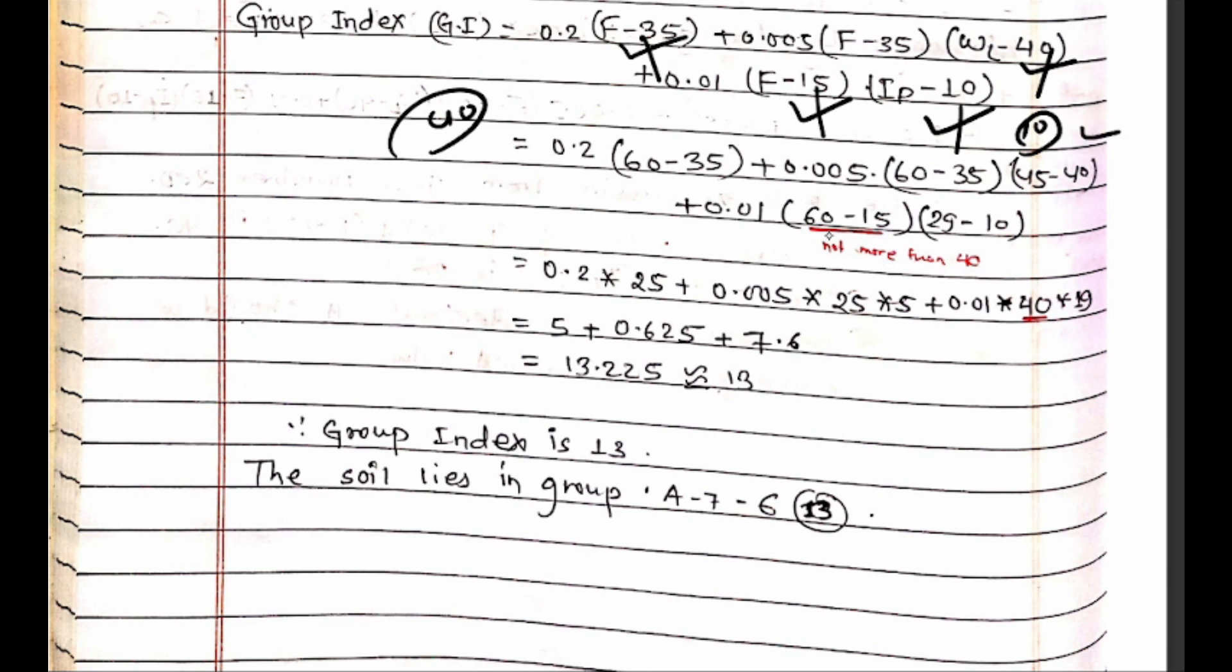So F-15 value is 40 and WL-40 or IP-10 value is 10. This completes the classification using the AASHTO system.